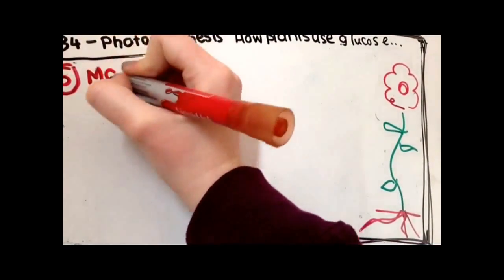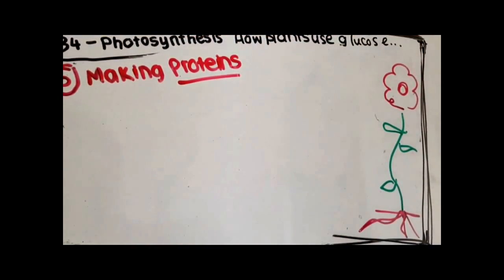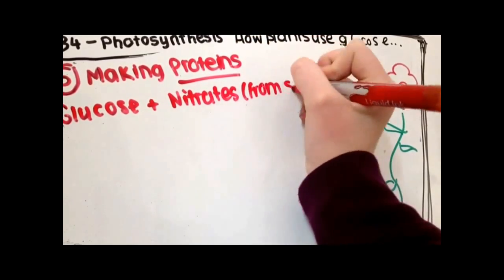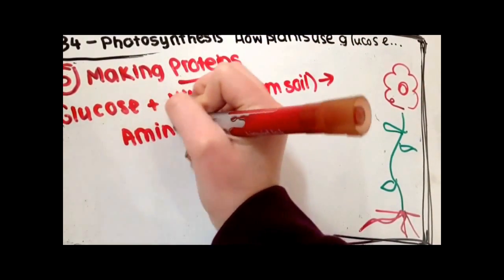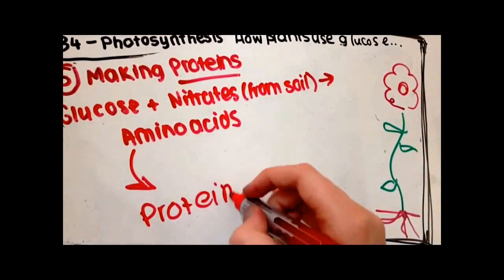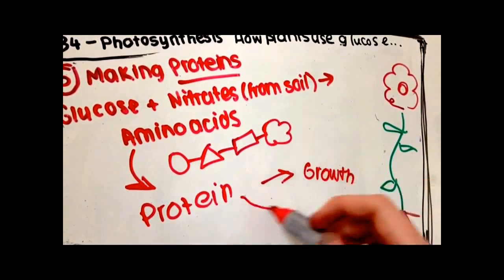Finally, glucose is used for making proteins. When making proteins, glucose is combined with nitrates which are collected from the soil to make amino acids. These amino acids will then be made into proteins which are used for growth and repair.